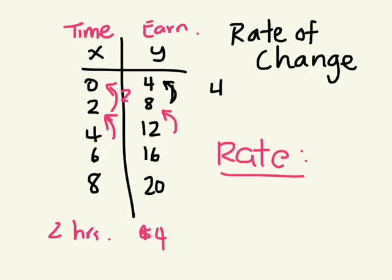What's your rate of pay? What's the rate at which you're getting paid if you're earning $4? $2 an hour. Good. How did you get that? I divided 4 by 2, right? Which means you're making $2 per hour.